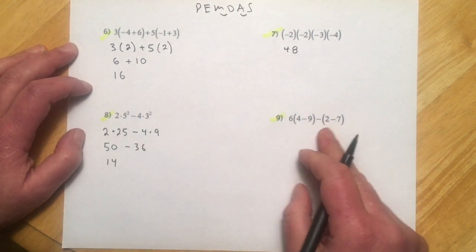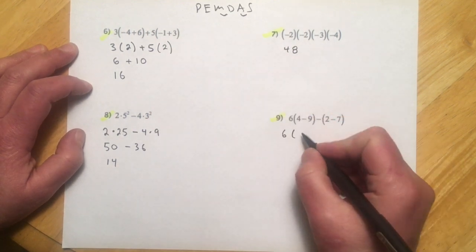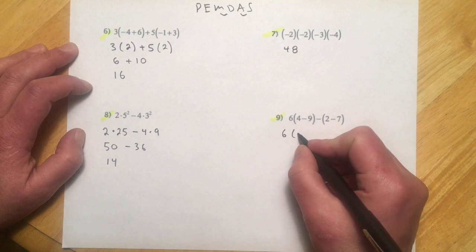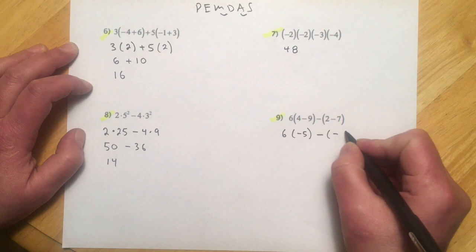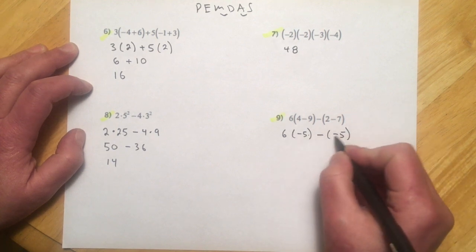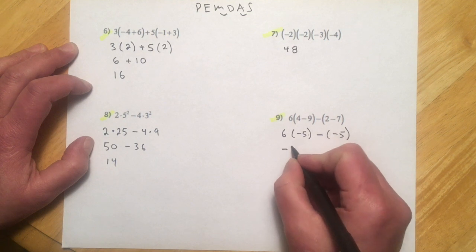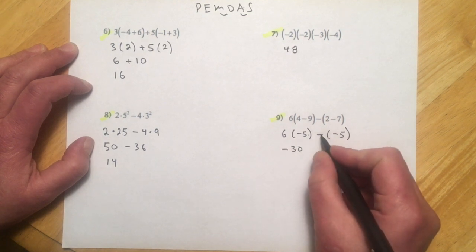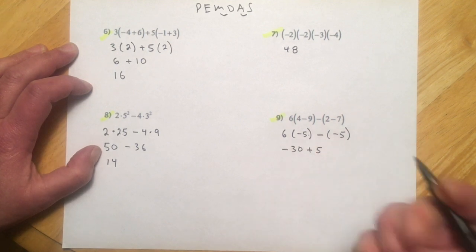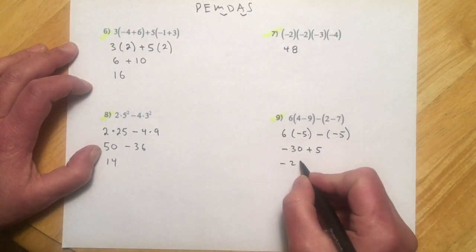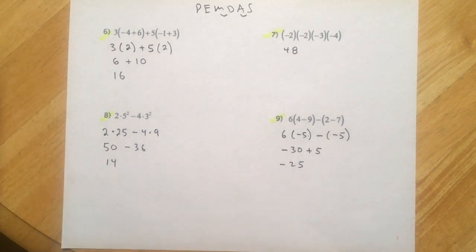And let's see, this last one here. Pretty similar to that. 6, 4 minus 9 is going to give me a negative 5. Minus 2 minus 7 is going to give me another negative 5. A little bit trickier on the signs. So 6 times negative 5 is negative 30. Minus a negative 5 is going to change that to a plus 5. And then down 30 and then back up 5. Should be 25. Sorry, negative 25.